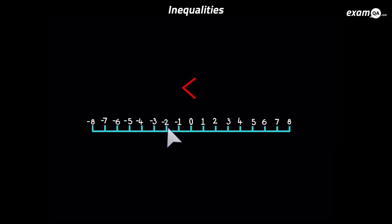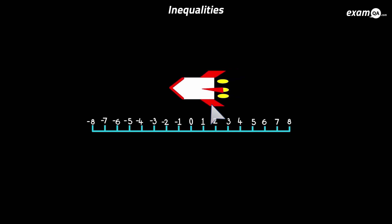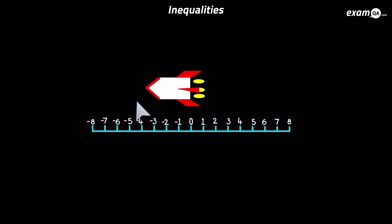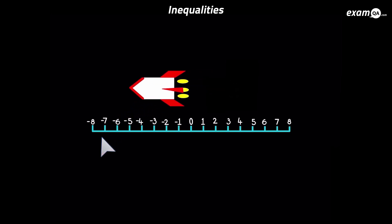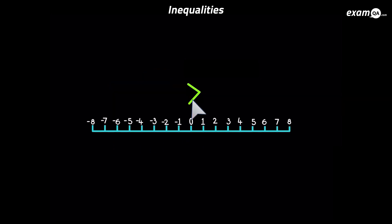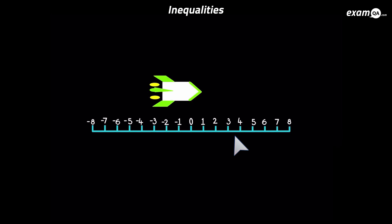Imagine it's a rocket — it's traveling in the direction which is getting less. Here we've got a rocket traveling to the left, in the less than direction on the number line. And here we've got the more than sign, facing in the more than direction on the number line — if you imagine it's a rocket, it's getting more on the number line.